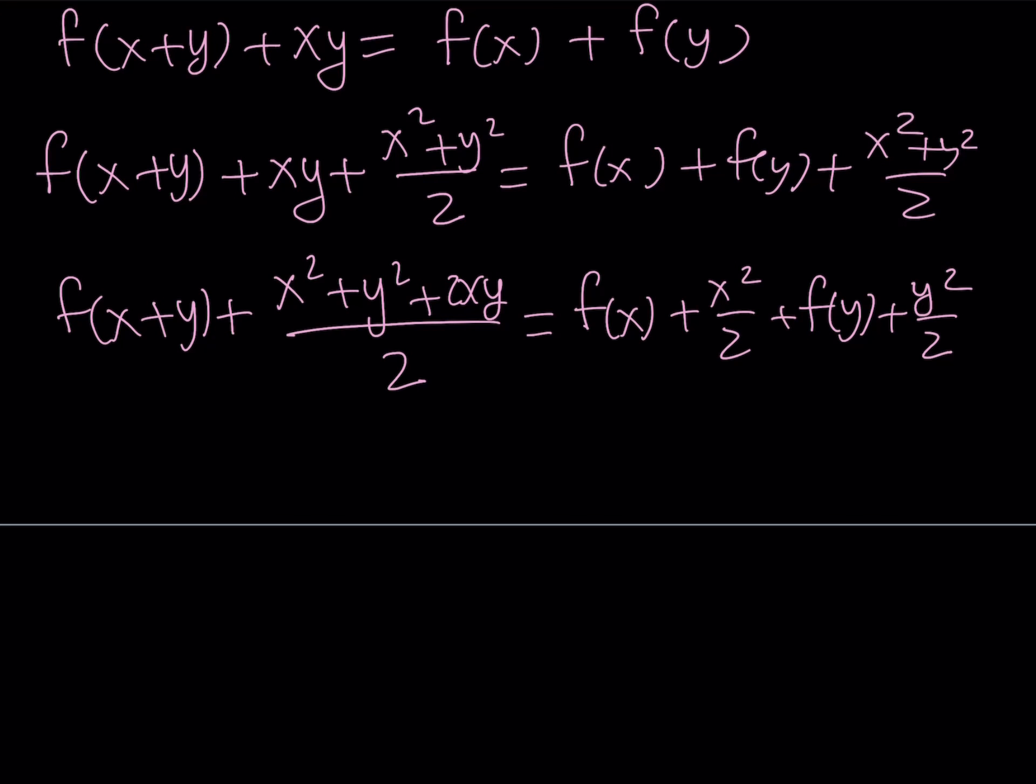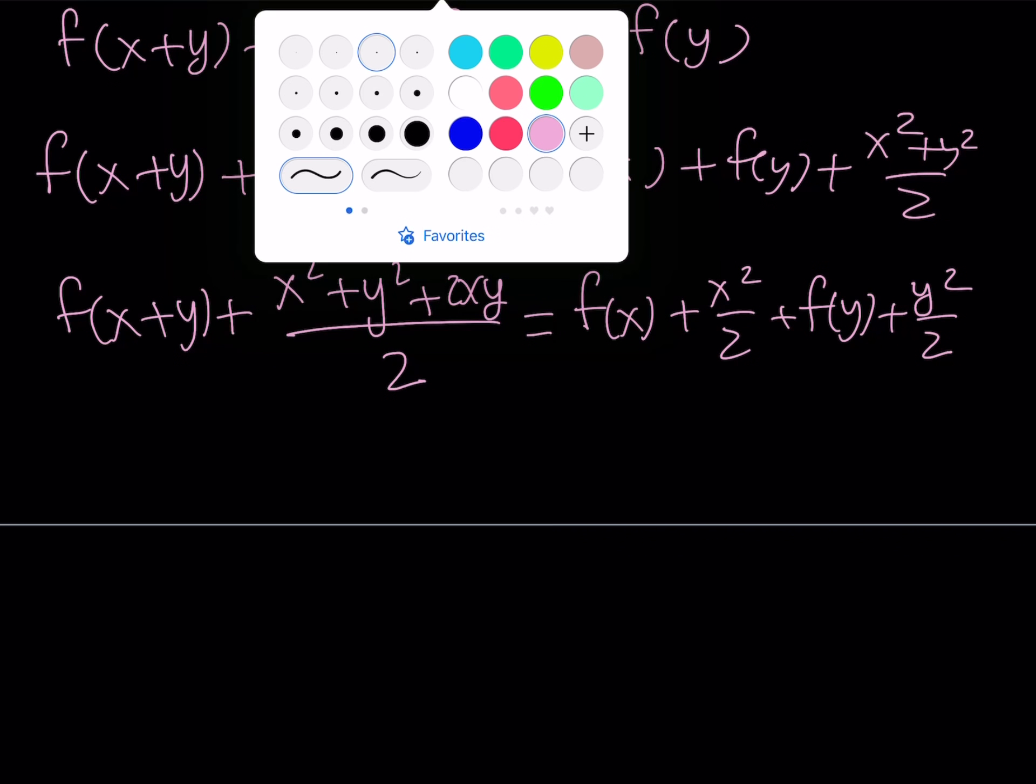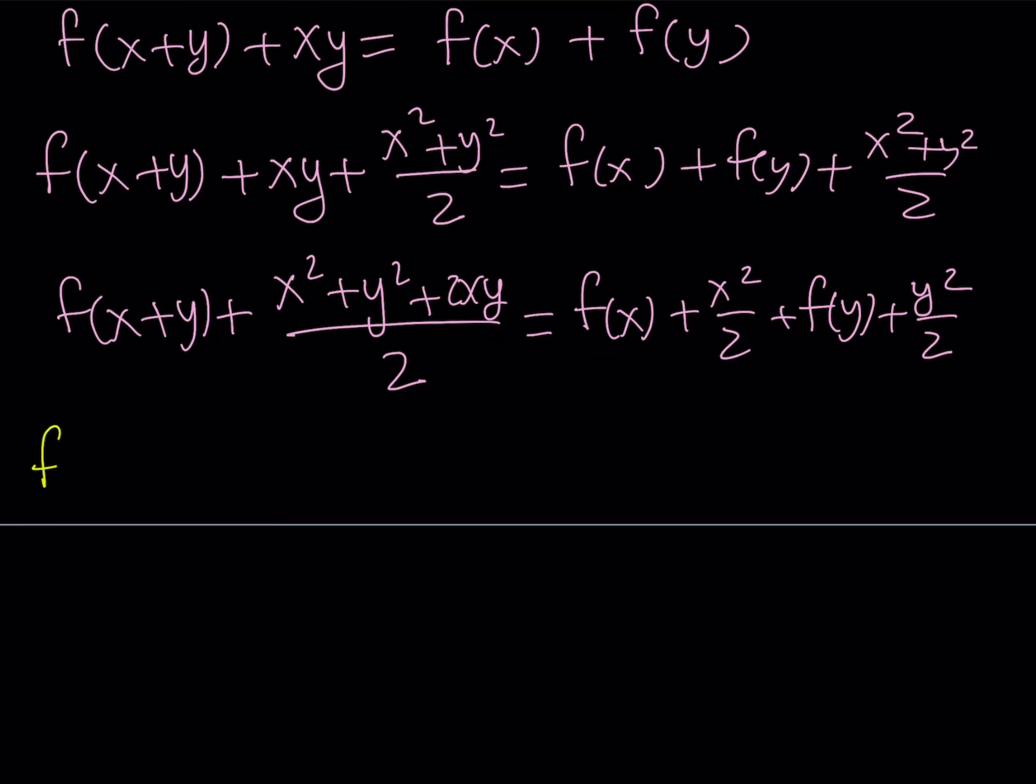Now, at this point, we're going to do something super important. Remember, our goal was to complete the square. So what we have on the left hand side can be written as x plus y quantity squared divided by 2. And on the right hand side, we kind of see something similar. I hope you see what I see.